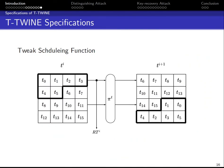The third part is the tweak scheduling function. At the start, the tweak is loaded into a 16-nibble state T. At each round, the first six nibbles are used as a round tweak, and then the 16 nibbles are shuffled.